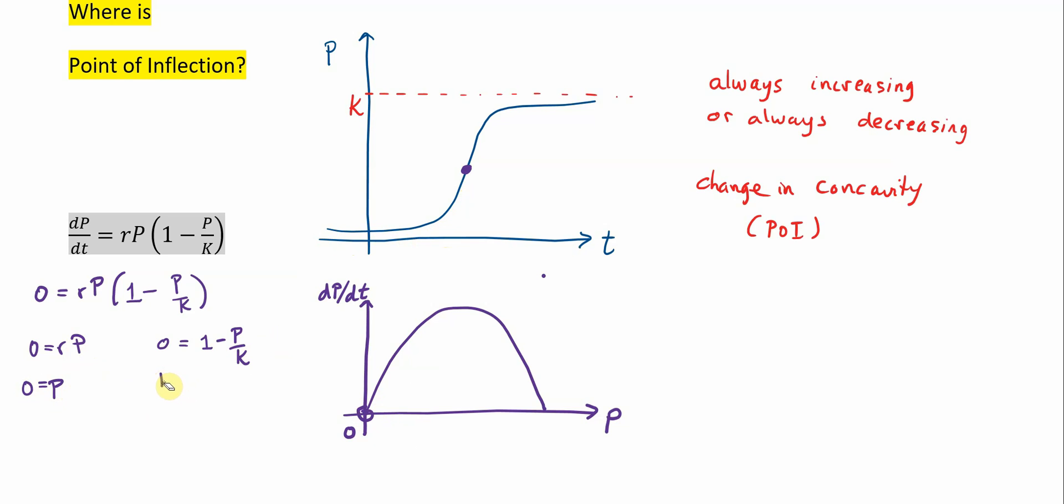And over here, when we solve this, P over K is going to equal one, and so P is going to equal K. So here, another open circle, this is going to be equal to K.